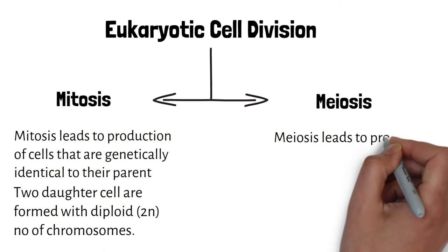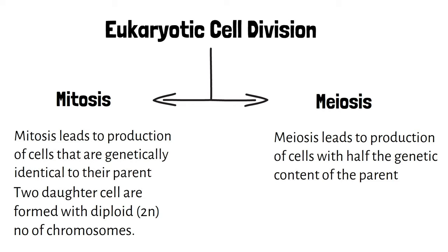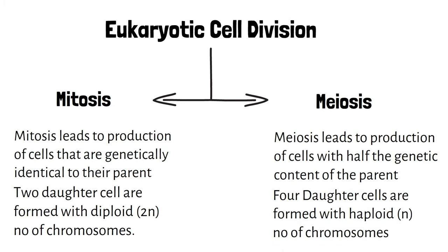Meiosis leads to production of cells with half the genetic content of a parent. This specialized kind of cell division reduces the chromosome number by half and results in production of four haploid daughter cells.